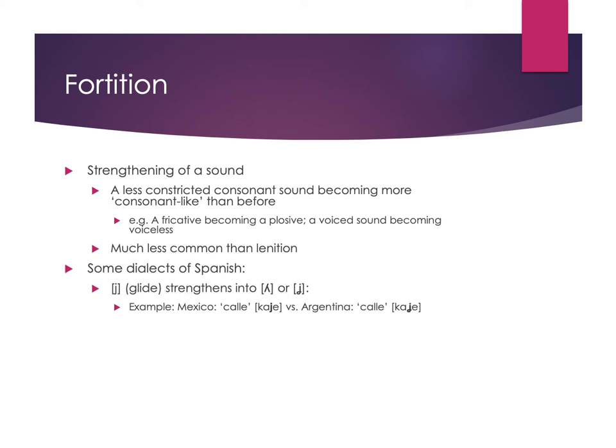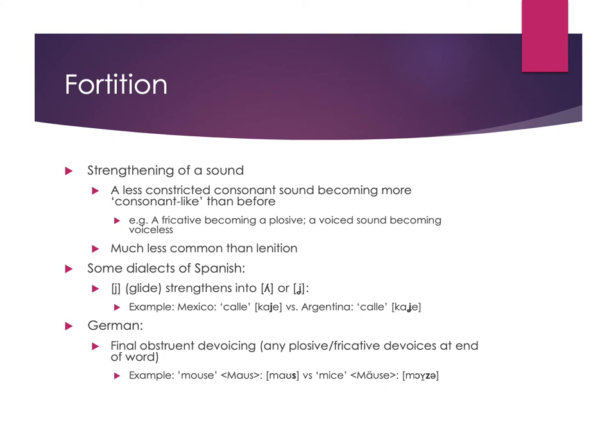Fortition also happens frequently in Germanic languages, where an obstruent at the end of a word will devoice. In German, 'mouse' ends with an S sound, but 'mice' is 'mäuse'. The Z sound at the end drops its voicing, producing a stronger consonant. The word-final environment prevents the voiced Z from remaining voiced, so it strengthens by becoming voiceless.